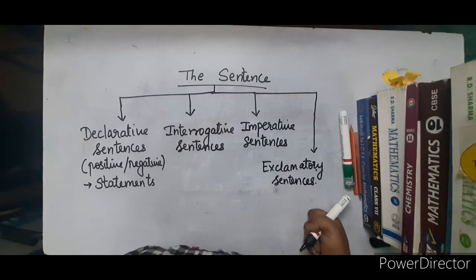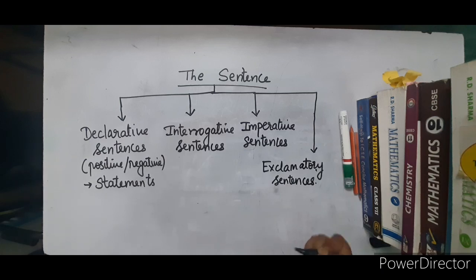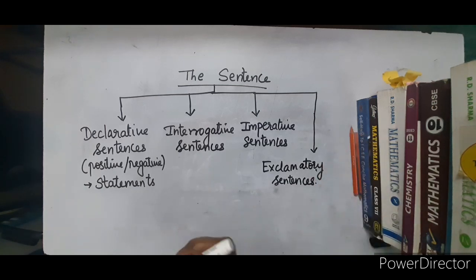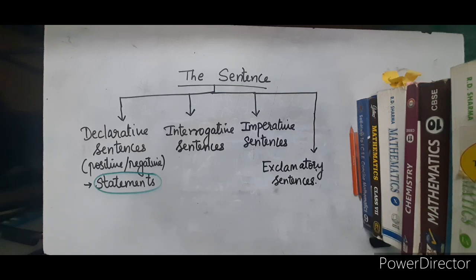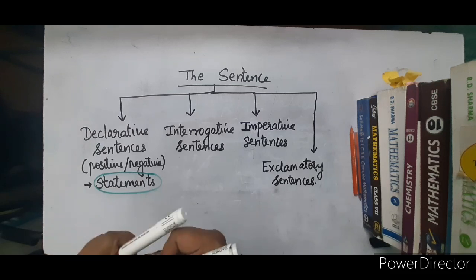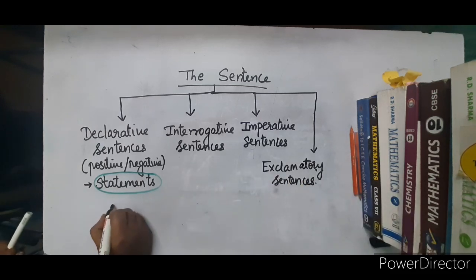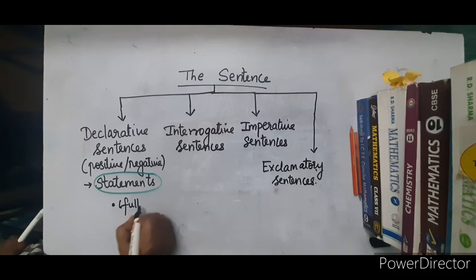First is declarative sentences. When we talk about declarative sentences, the simple name for them is statements. We call it statements. The end punctuation mark of a declarative sentence is usually a full stop.